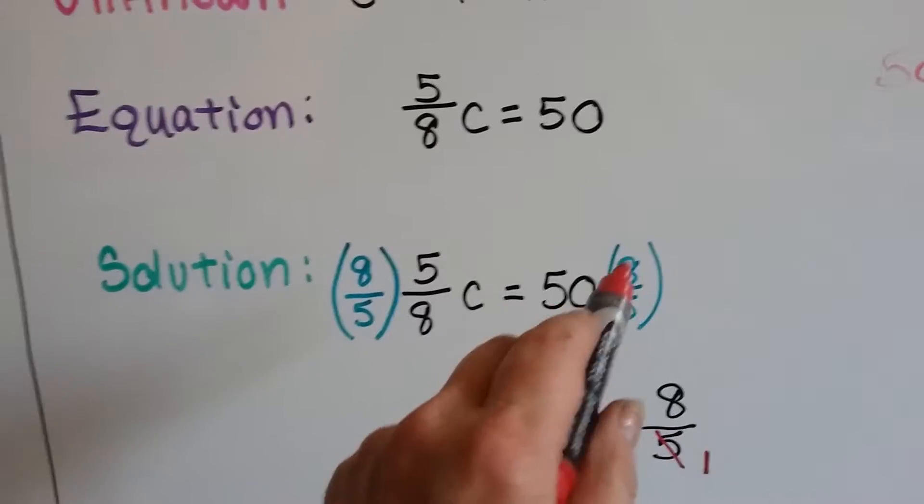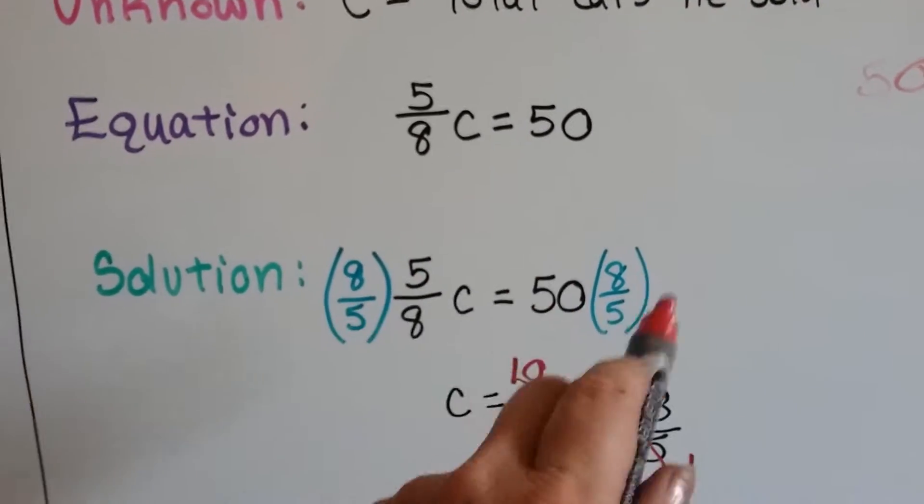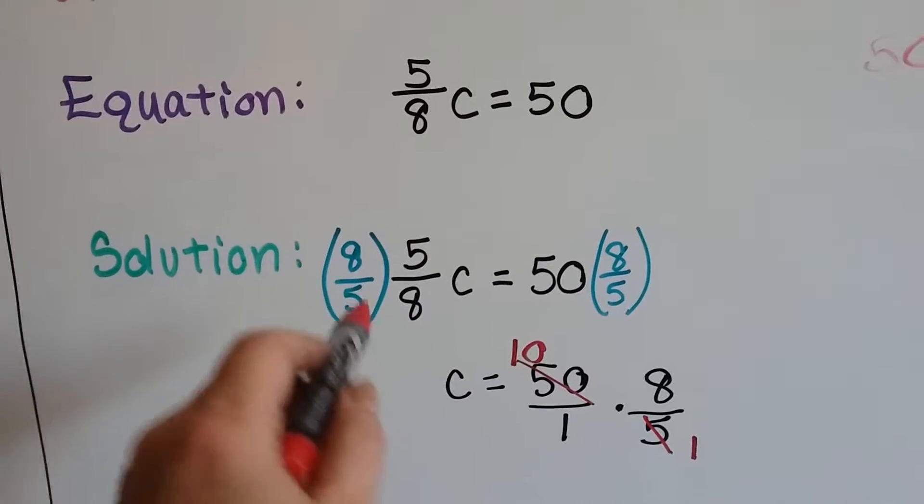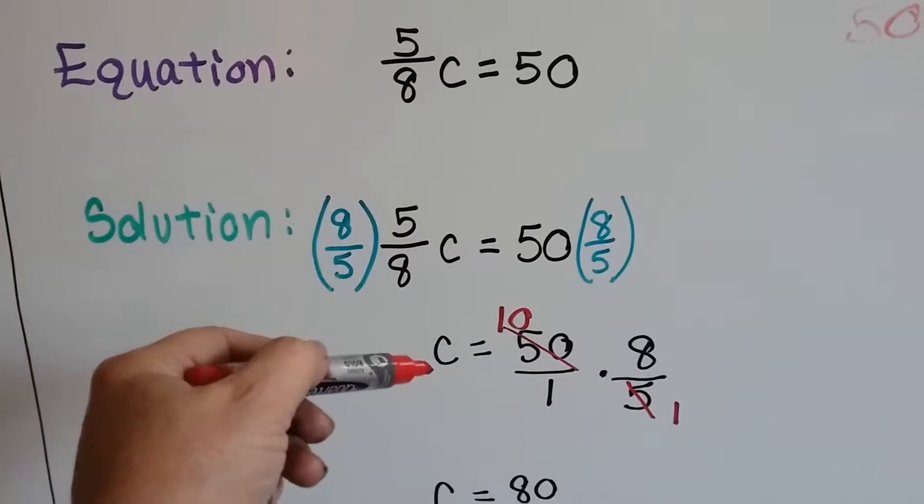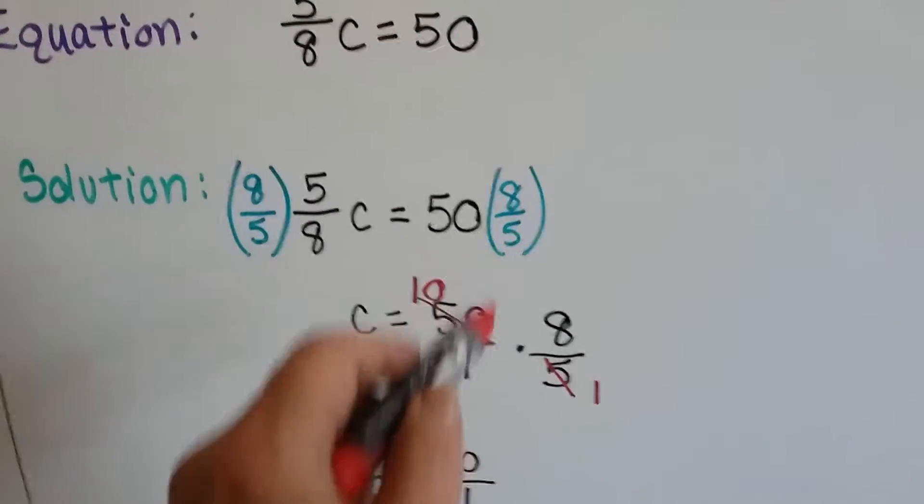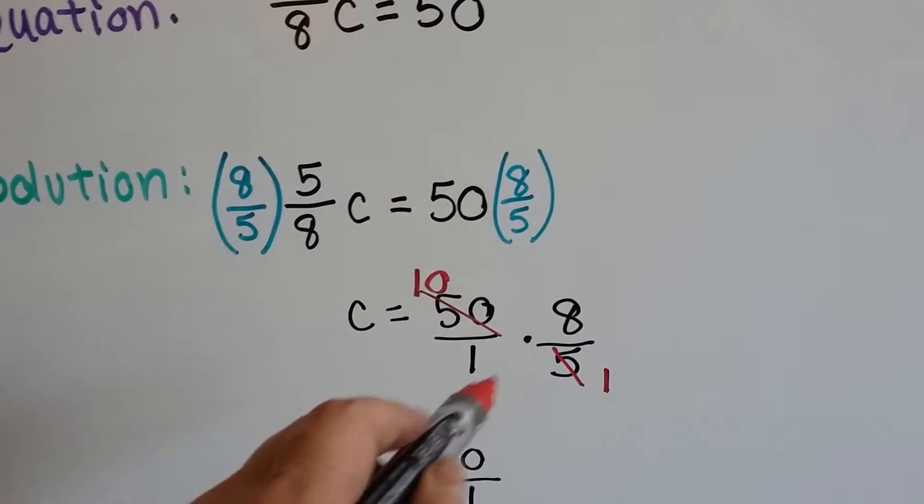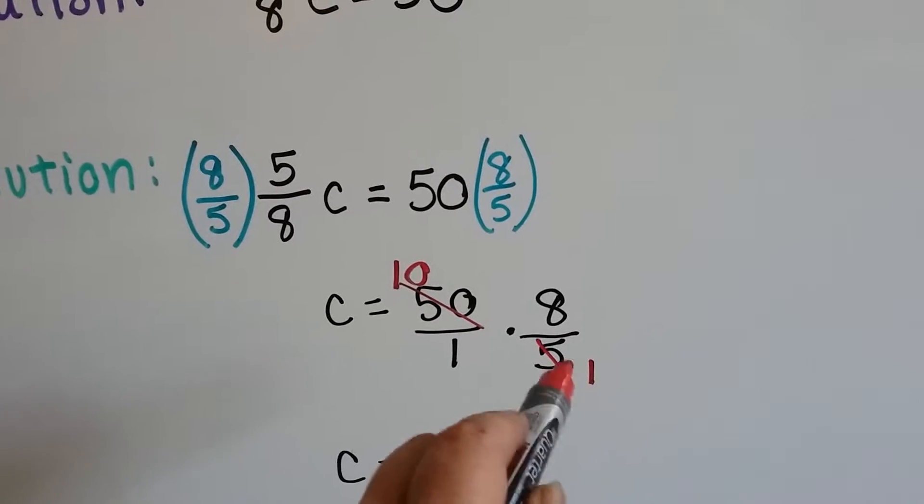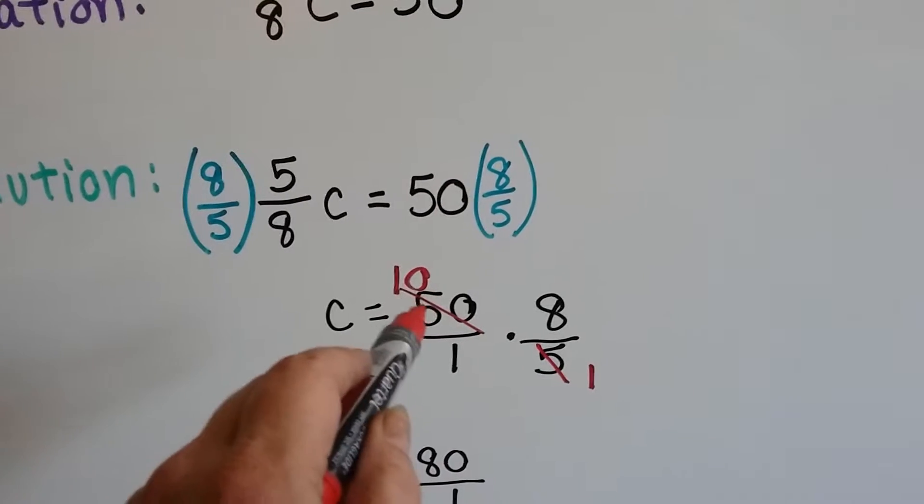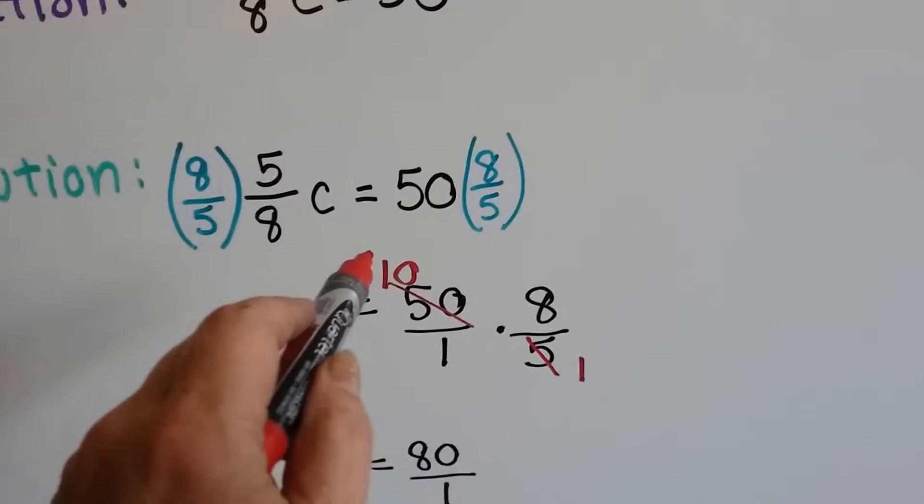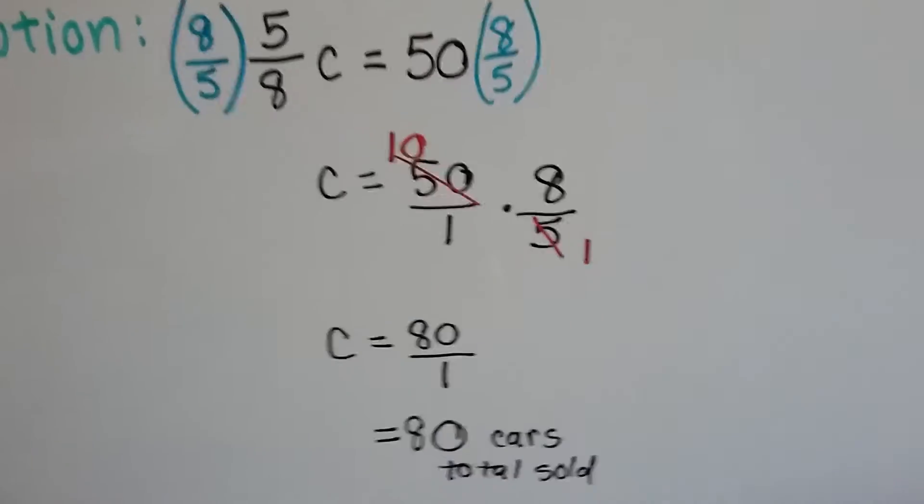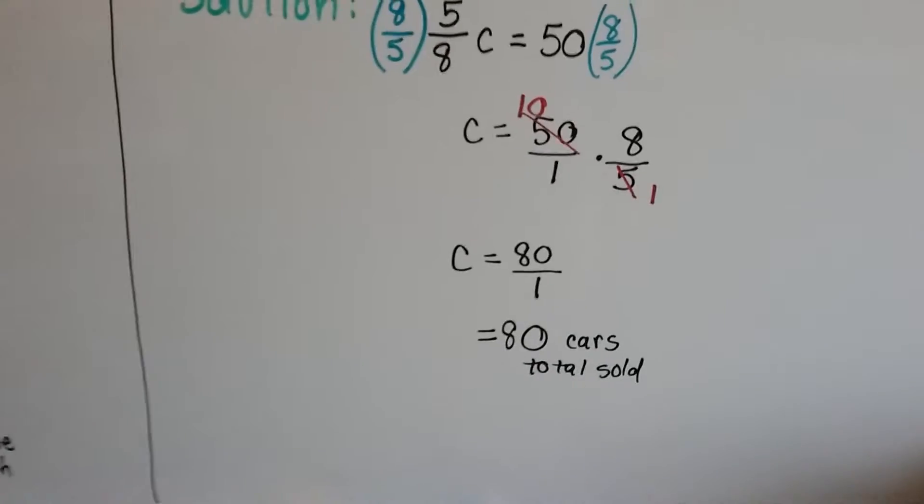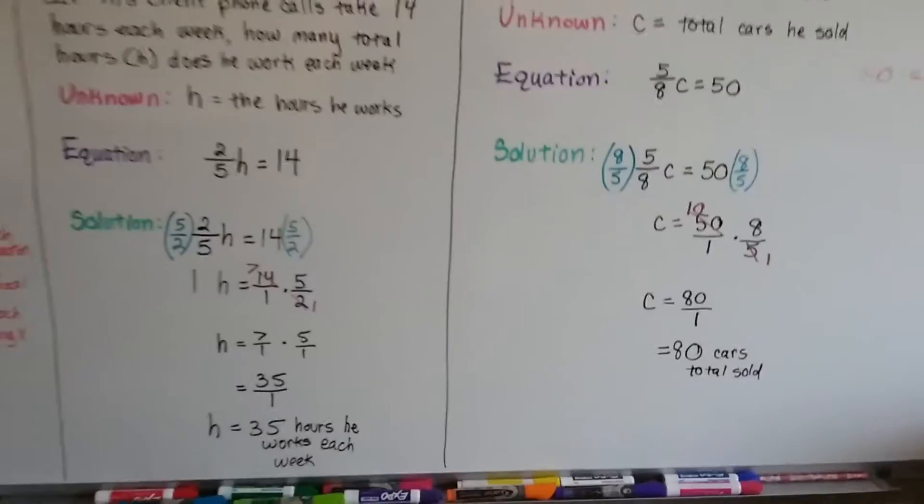Here's our solution. We had to put the reciprocal eight-fifths, which is five-eighths flipped, on each side and that turned this into eight times five is forty over eight times five is forty. Forty-fortieths is a one, so now we know there's one C here. We open this up as a fraction: fifty over one times eight over five. This five turns into a one. There's one five here and ten fives here, so that's a one and that's a ten. Now we've got ten times eight over one. That's easy. That's eighty. So C equals the eighty total cars he sold.